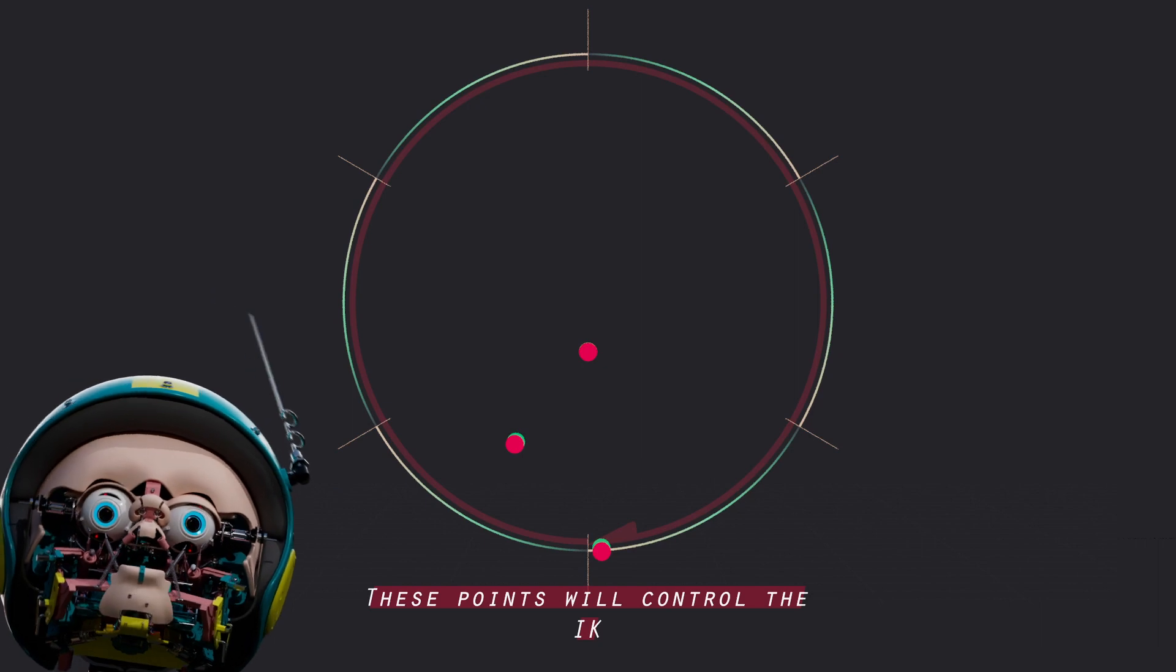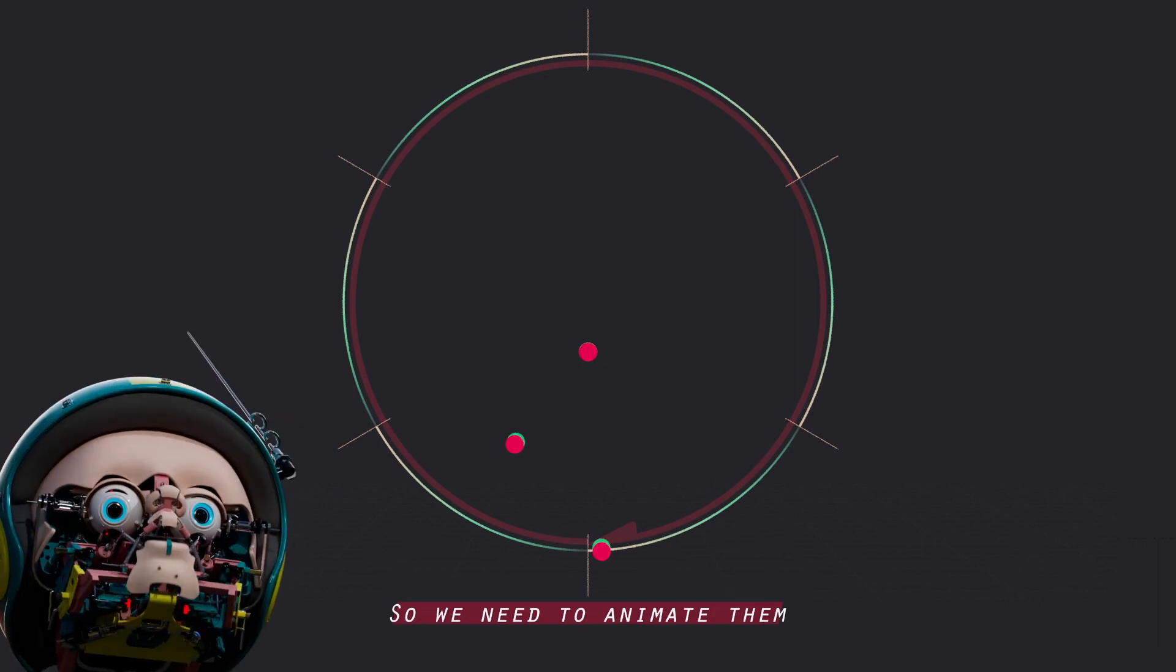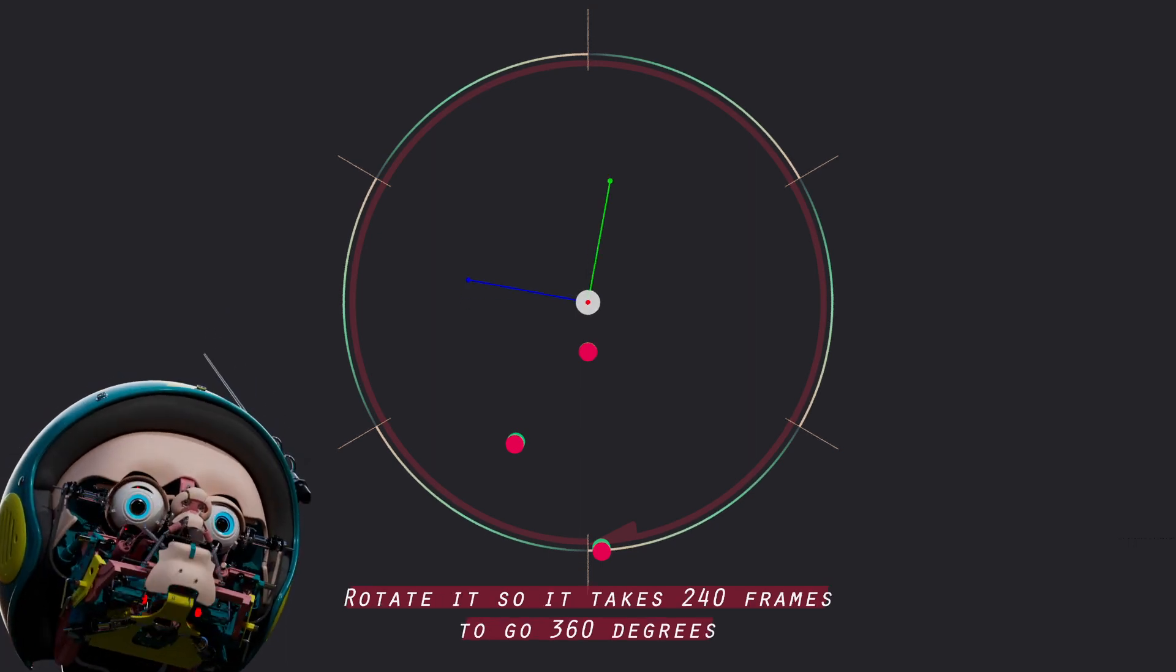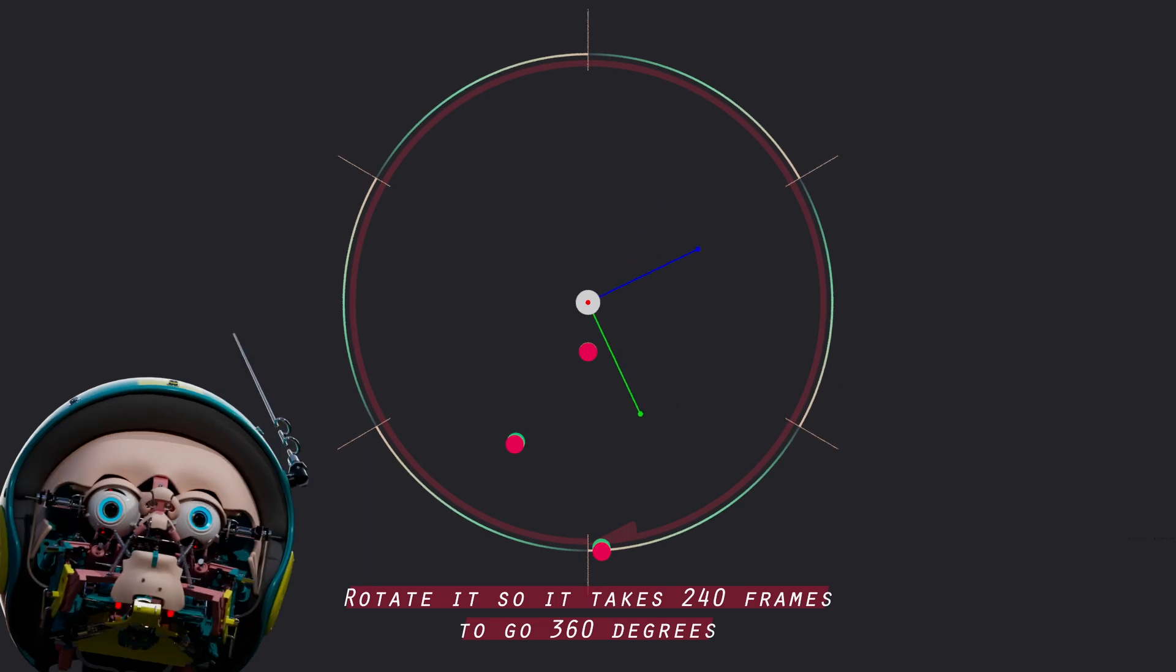These points will control the IK, so we need to animate them. Create a bone in the center of the path. Rotate it so it takes 240 frames to go 360 degrees.